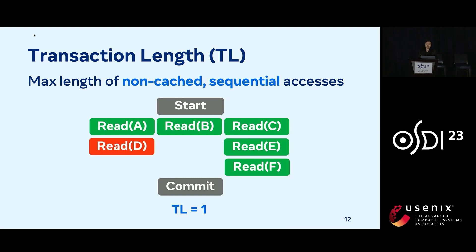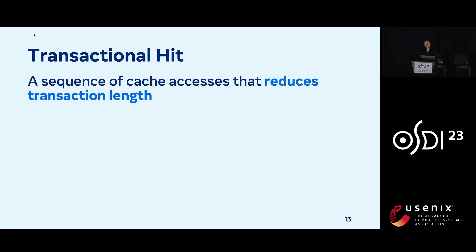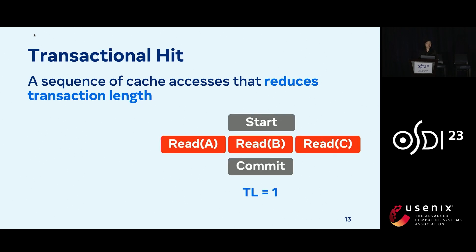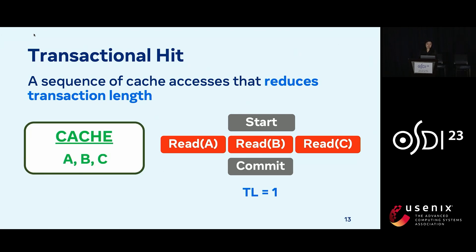With the notion of transaction length, we can now define a transactional hit, which is a sequence of cache accesses that reduces transaction length. As an example, we have a transaction reading A, B, and C with transaction length of one. If we are able to cache A, B, and C, then the transaction length becomes zero, and we have a transactional hit.